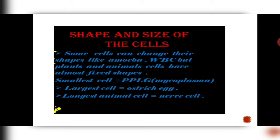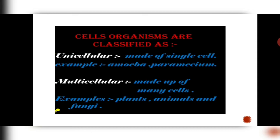The smallest cell known on the surface of the earth is PPLO, pleuro-pneumonia-like organism, which is a mycoplasma. The largest single cell is an ostrich egg. The longest animal cell is a neuron or a nerve cell in humans. Depending upon how many cells are present in an organism, there are two types of organisms.